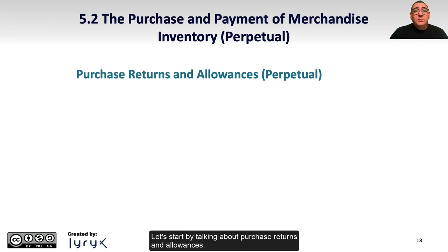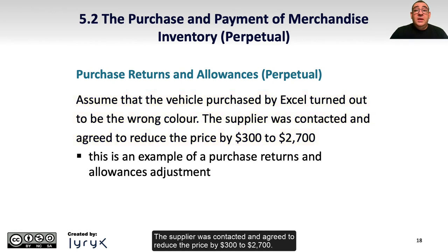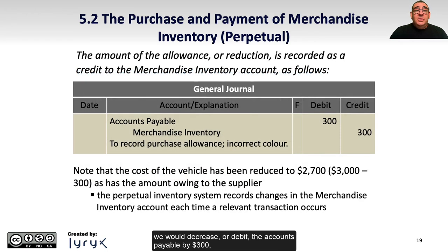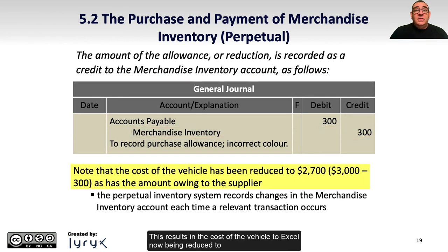Let's start by talking about purchase returns and allowances. Assume that the vehicle purchased by Excel turned out to be the wrong color. The supplier was contacted and agreed to reduce the price by $300 to $2,700. This is an example of a purchase return and allowance adjustment. We would decrease or debit accounts payable by $300 and decrease or credit the merchandise inventory account. This results in the cost of the vehicle to Excel now being reduced to $2,700, and that's how much is to be paid to the supplier.